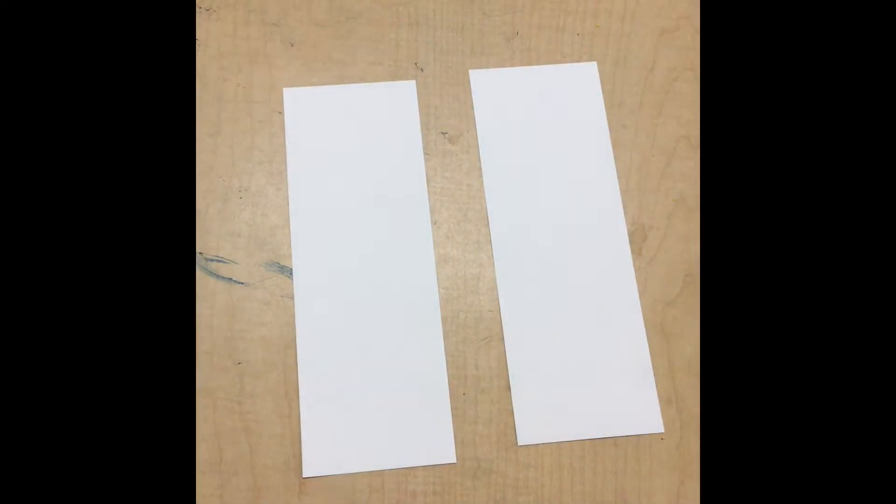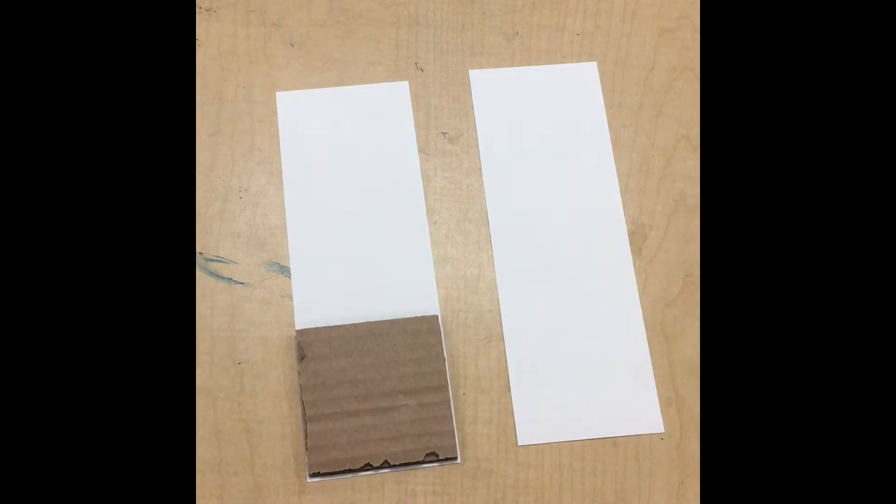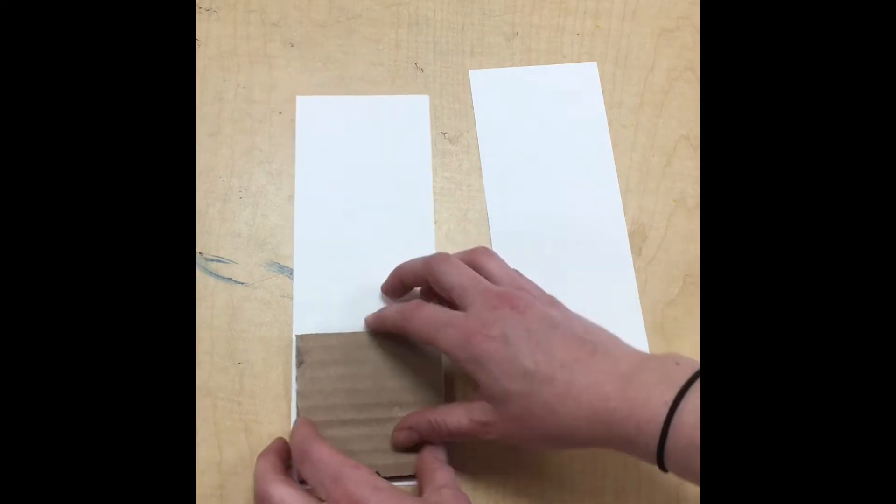You're going to need two pieces of paper. Mrs. Hayes cut these so they are exactly three by nine. That means each square will be about three inches, and there are cardboard squares to help you fold this the right way.